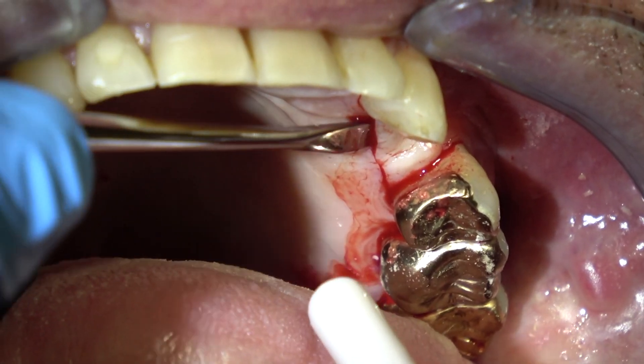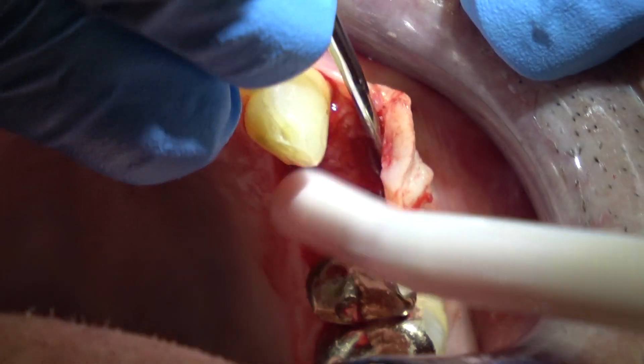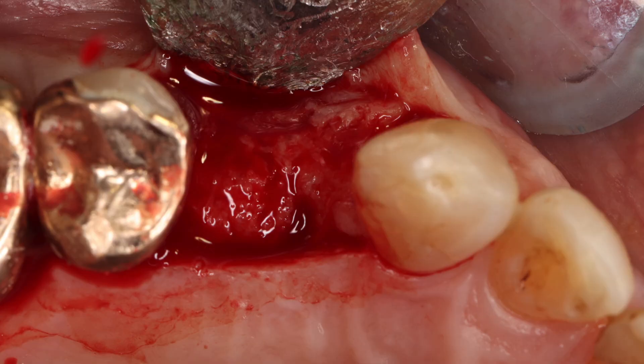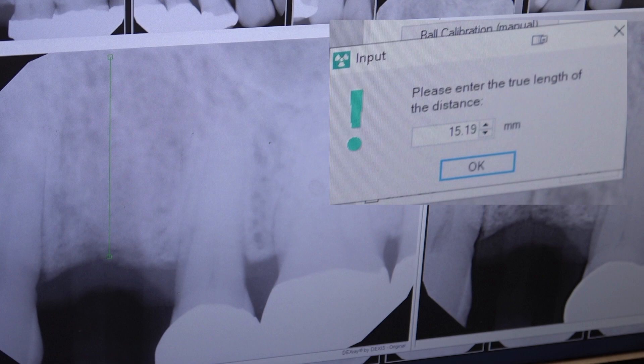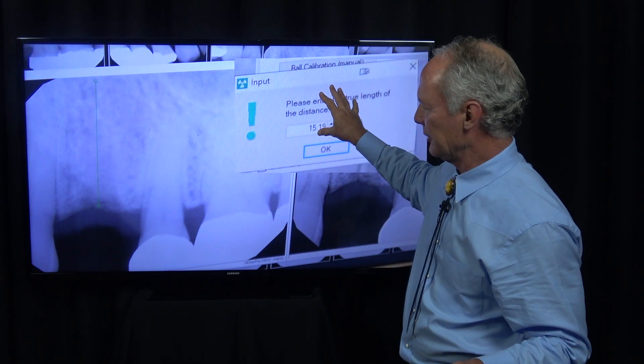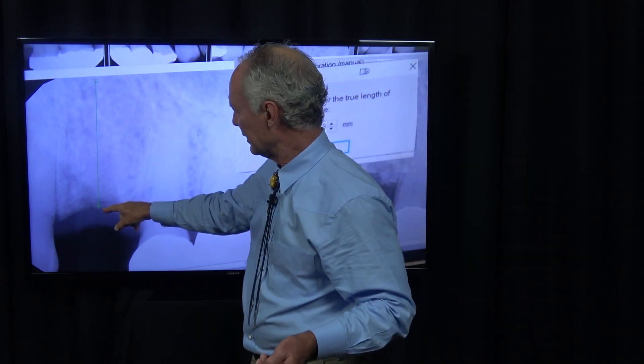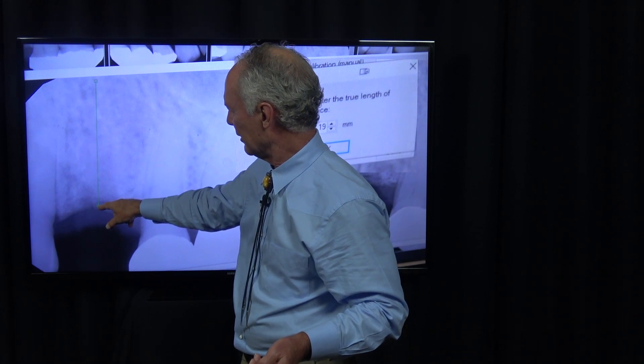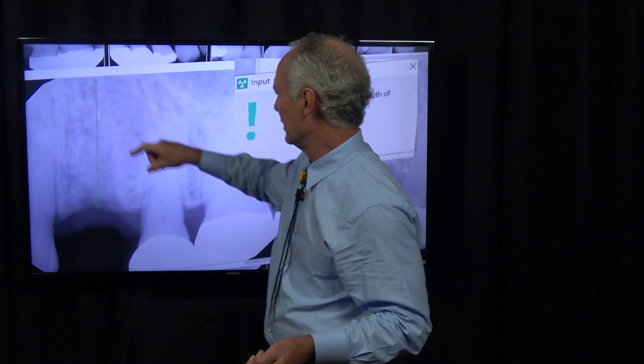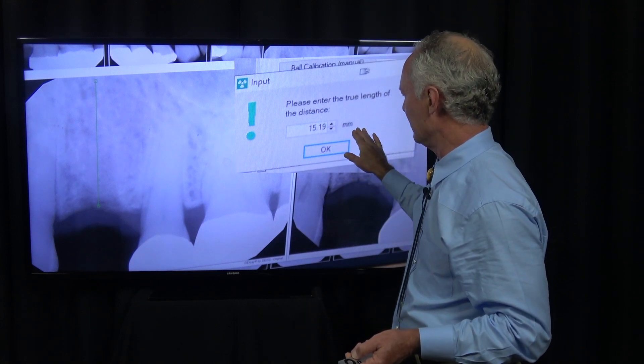This is a periosteal elevator for a full-thickness flap. You can see how solid this is. Now I'm using my application to take a radiograph from the alveolar crest apically to see how much room I've got. I've got plenty of room.